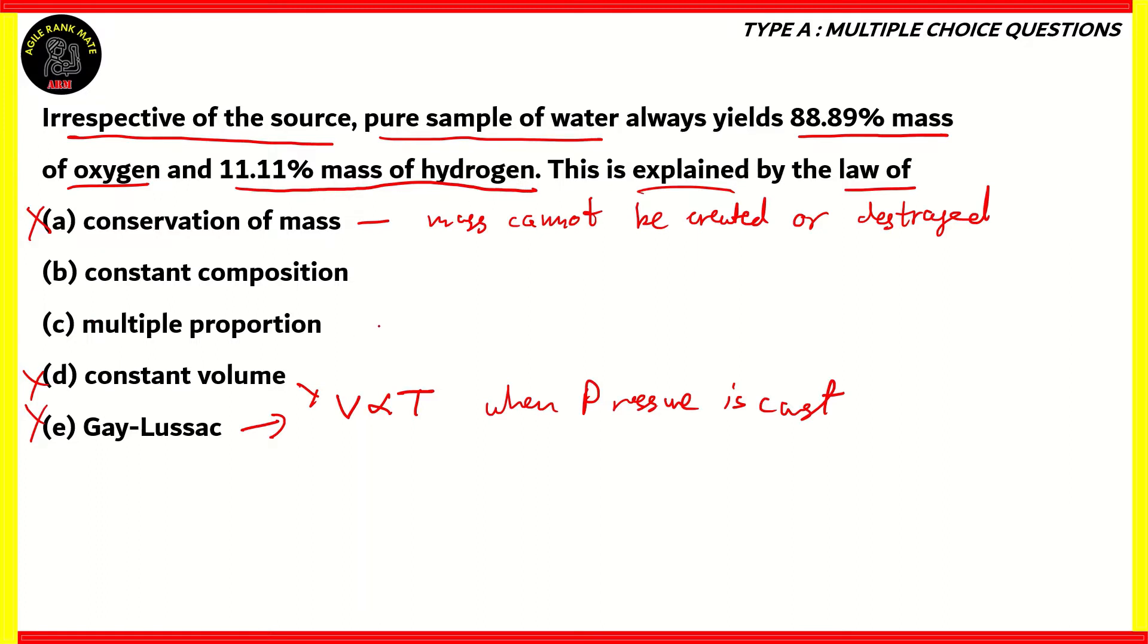What about option C, multiple proportion? Well, the law of multiple proportion states that if two elements form more than one compound, then the ratio of masses of the second element which combined with the fixed mass of the first element would be ratios of small whole numbers. In order to explain this, if we take nitrogen dioxide and nitrogen oxide, you can see that the mass of nitrogen would be the same because there is only one atom of nitrogen. However, the mass of oxygen would differ. We have two atoms of oxygen versus one atom of oxygen. So as you can see, the ratio here is of small whole numbers. That is what the law of multiple proportion explains.